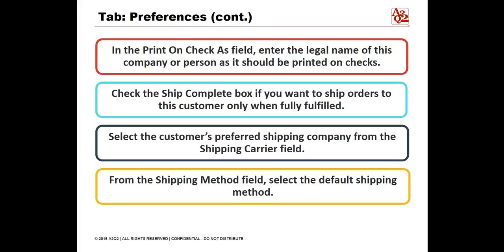Check the Ship Complete box if you want to ship orders to this customer only when fully fulfilled. Select the customer's preferred shipping company from the Shipping Carrier field, for example UPS or FedEx. From the Shipping Method field, select the default shipping method, for example UPS Ground or UPS Next Day Air.